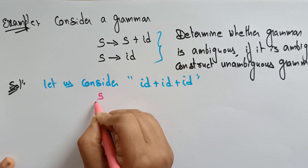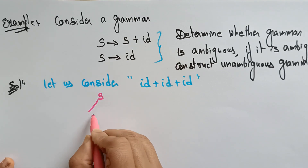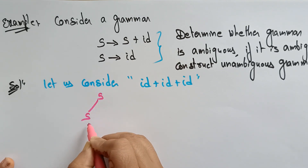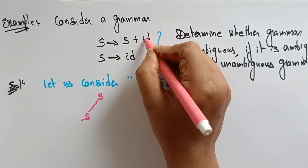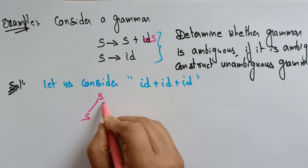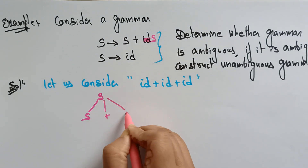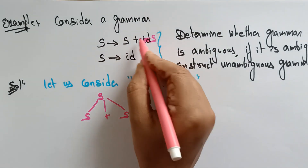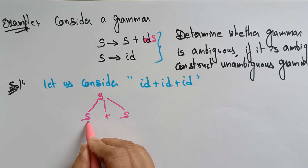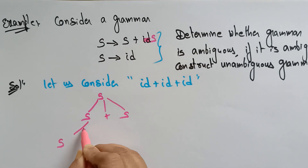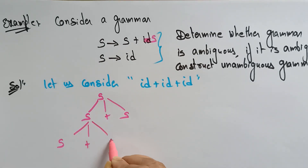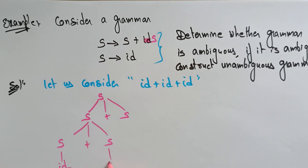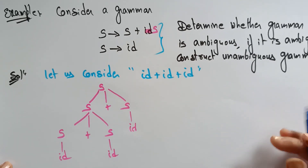S is the start symbol. S is replaced with s plus s. Again, s is replaced with s plus s, and then s is replaced with id, id, id. So this is one parse tree.